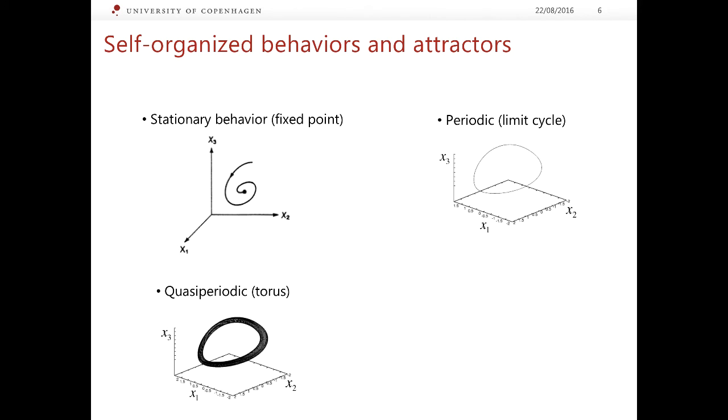The third kind of attractor is slightly more complicated. It can only exist in the phase space whose dimension is three or more. So, in a three-dimensional phase space, this quasi-periodic attractor will look like the surface of a donut, and it has the name torus, in particular a two-dimensional torus for a three-dimensional space.